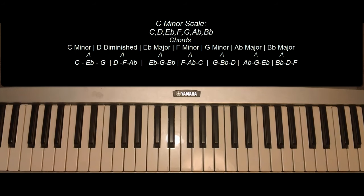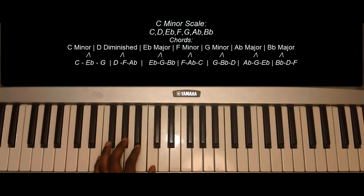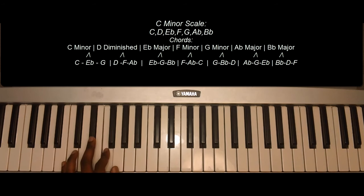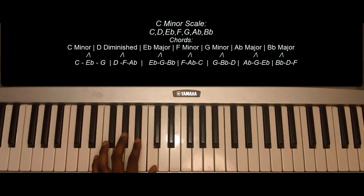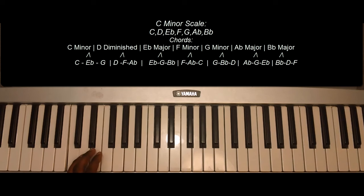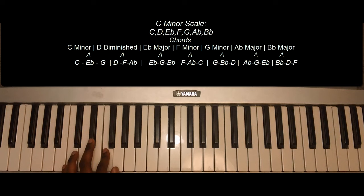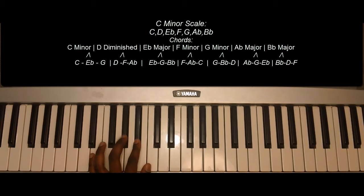The C minor scale. The notes of the C minor scale: C, D, E flat, F, G, A flat, B flat, C.